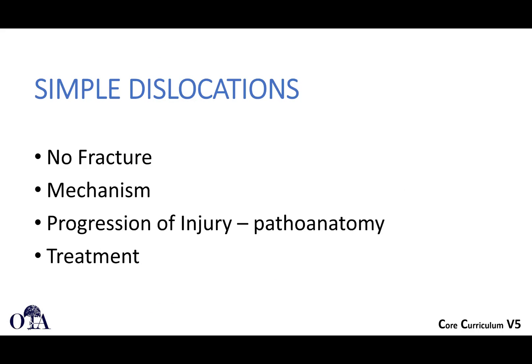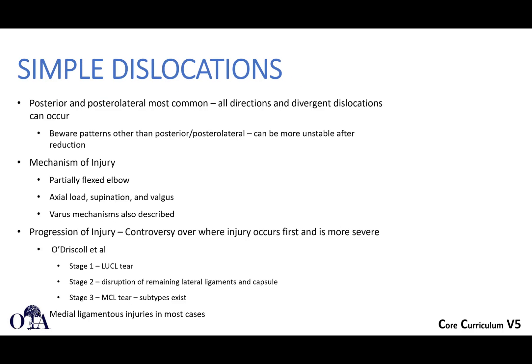For simple dislocations with no fracture, the posterolateral rotatory mechanism applies. Posterior and posterolateral are the most common directions. Be aware that other mechanisms may indicate more unstable injuries. The typical mechanism involves a partially flexed elbow with axial load, supination, and valgus.